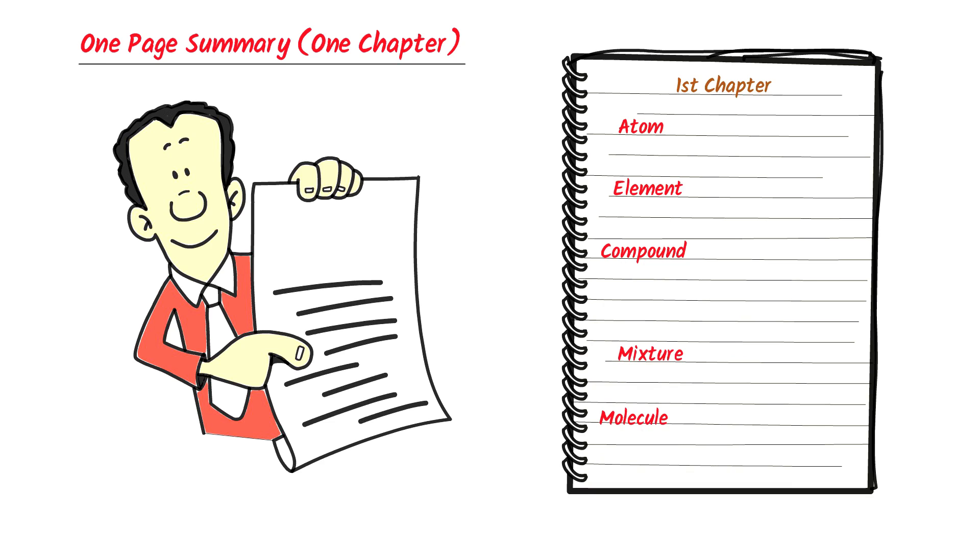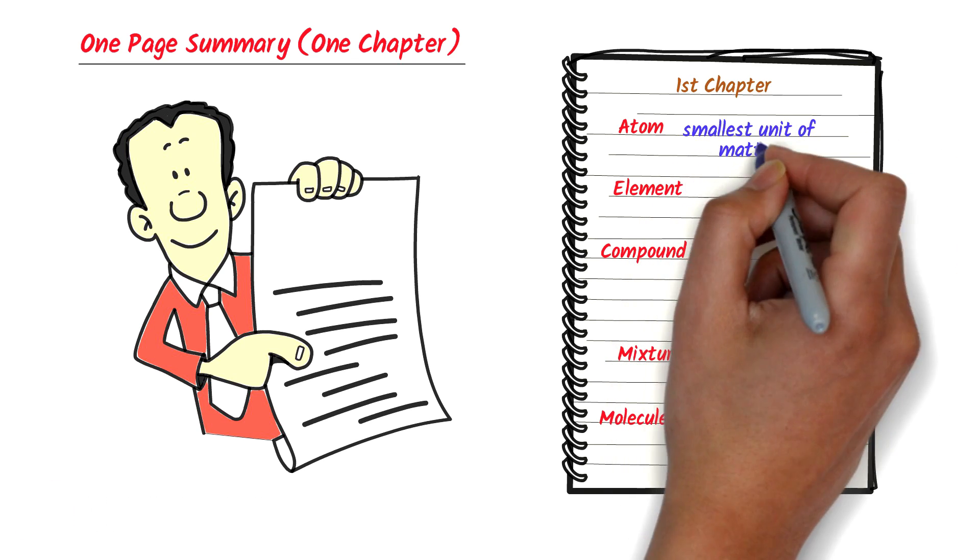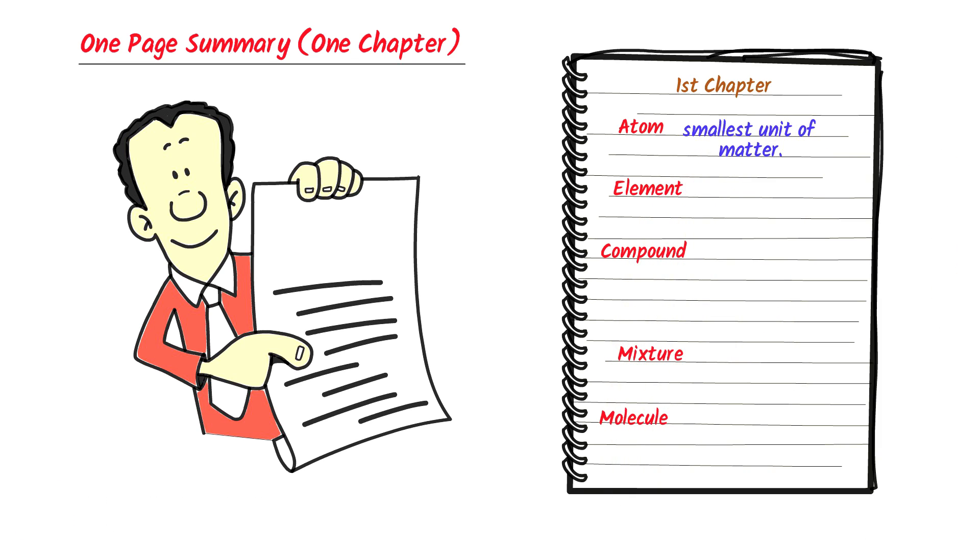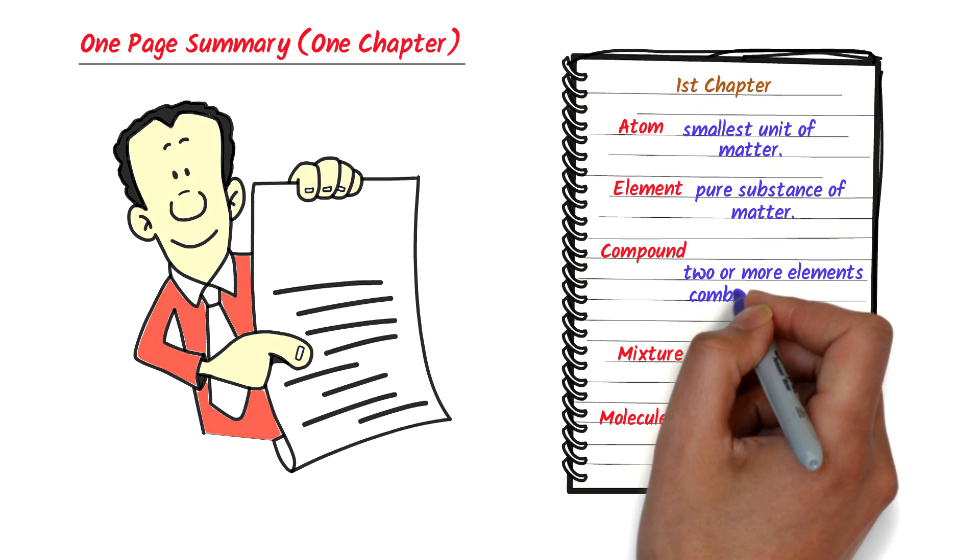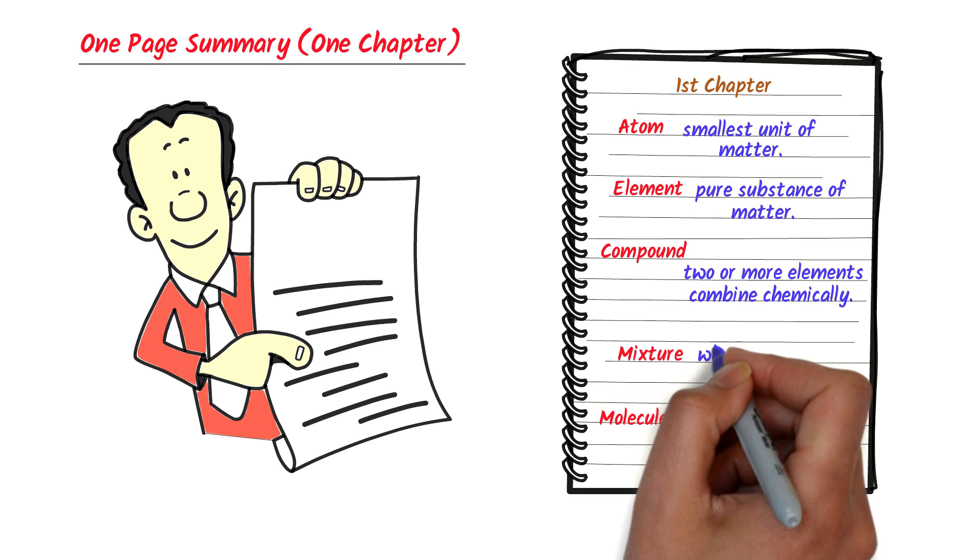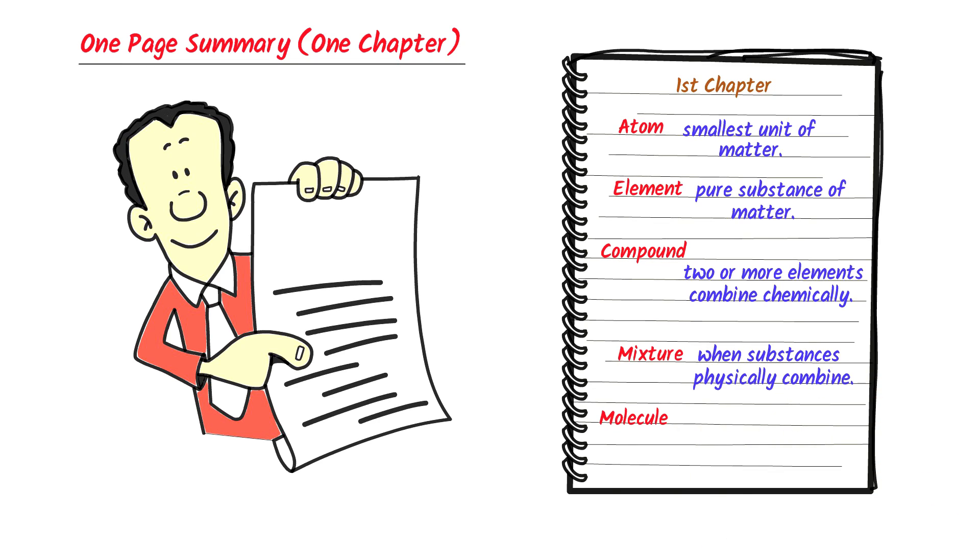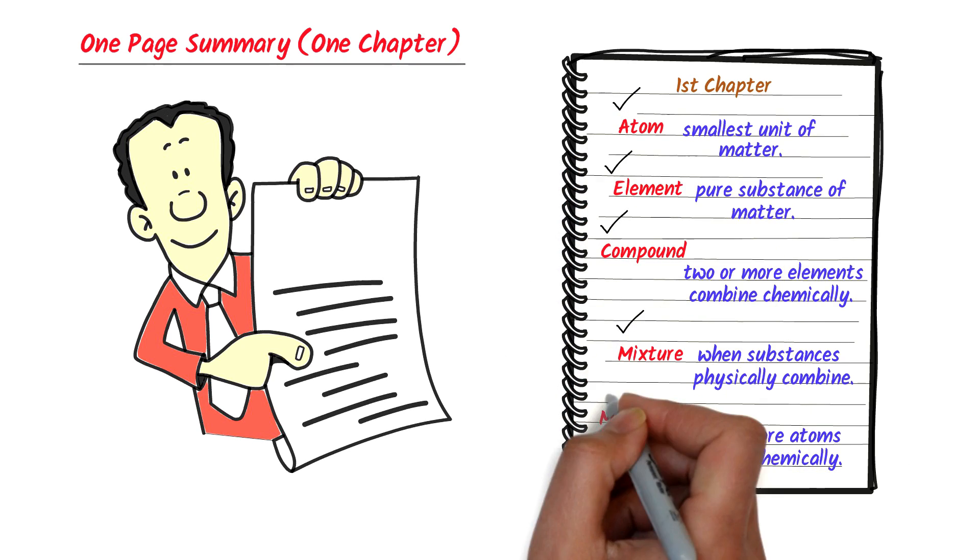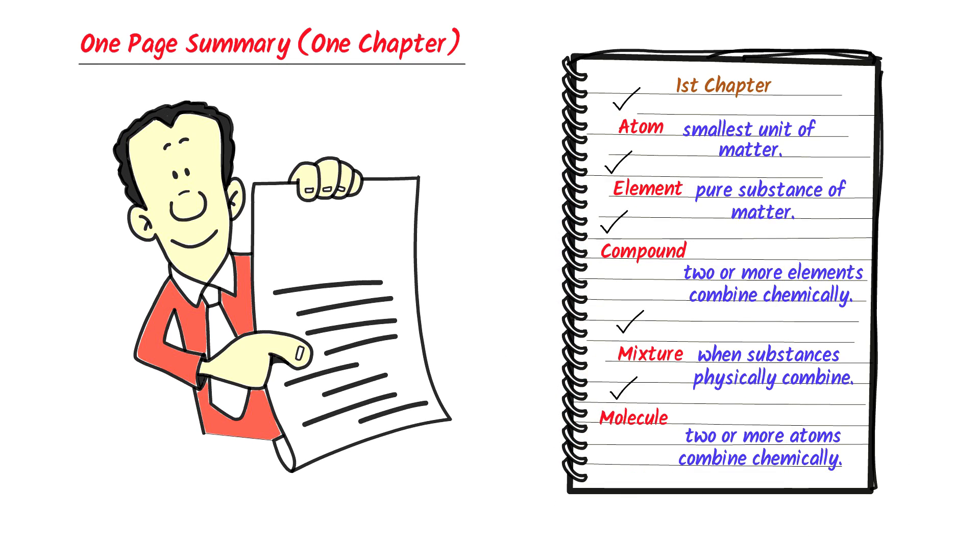Now, I will explain each topic in one or two bullet points like atom is the smallest unit of matter, element is the pure substance of matter, compound is formed when two or more than two elements combine together chemically, mixture is formed by physical combination of substances, molecule is formed when two or more than two atoms combine together chemically. Thus, by this way, I exactly know all the ingredients of the chapter. Also, it helps me to learn the chapter in few minutes.